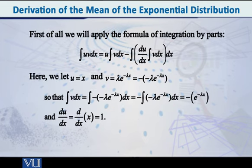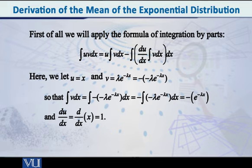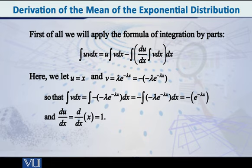To solve this integral, students, we will need to apply the formula of integration by parts. As you must already know, the integral of u times v with respect to x is given by u times the integral of v, minus the integral of the derivative of u with respect to x multiplied by the integral of v. In other words: first function as-is times integral of the second, minus the integral of the derivative of the first times the integral of the second.